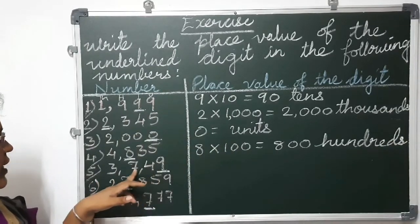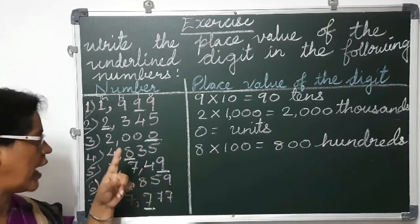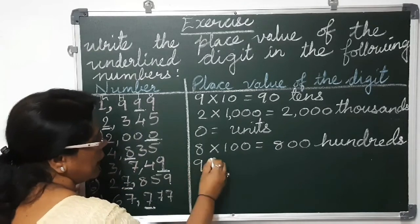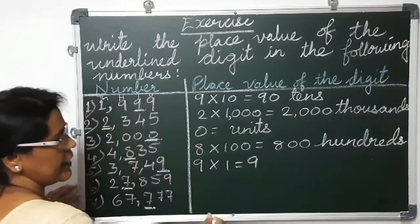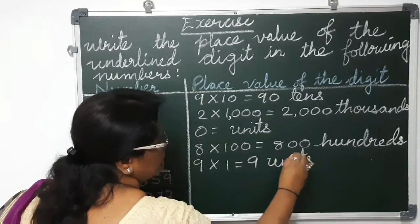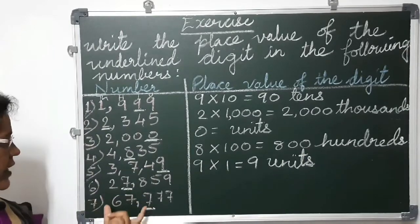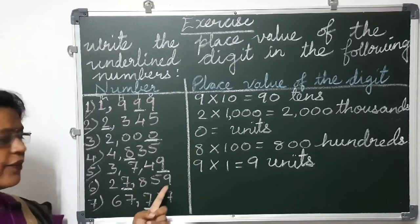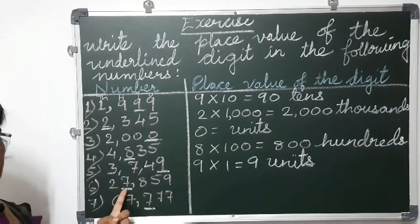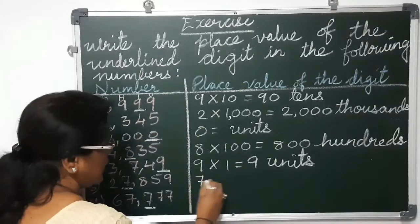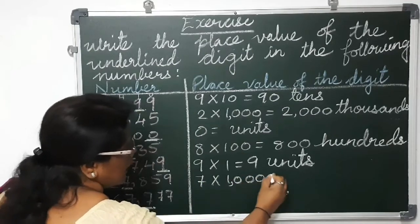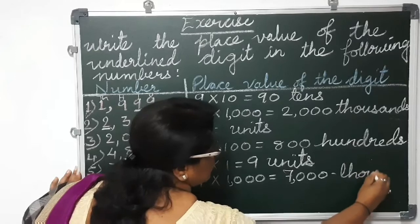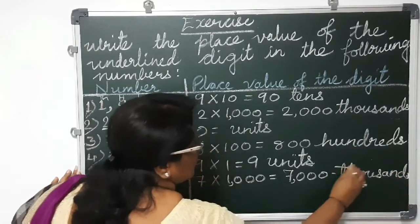Now the fifth number: units, tens, hundreds, thousands. It is 3,749 and the underlined digit here is 9. So 9 is in units place. 9 into 1 equals 9 — units place value. Now the sixth one — it is a 5 digit number: 27,859. The underlined digit is 7. So 7 is in thousands place. 7 into 1,000 equals 7,000 — thousands place value.